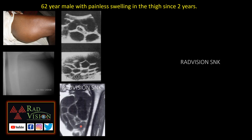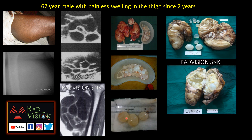Next case: a 62-year-old male with painless swelling in the thigh for 2 years. You can see there is a large cystic lesion in the thigh, also showing a large homogenous radiopaque density lesion on plain film. On ultrasound, there is a cystic lesion with multiple daughter cysts. On MRI, there are large cystic lesions with daughter cysts and enhancing septa. The intraoperative findings confirm the large cystic lesion with multiple daughter cysts, and the gross specimen is shown. This is hydatidosis of the thigh.